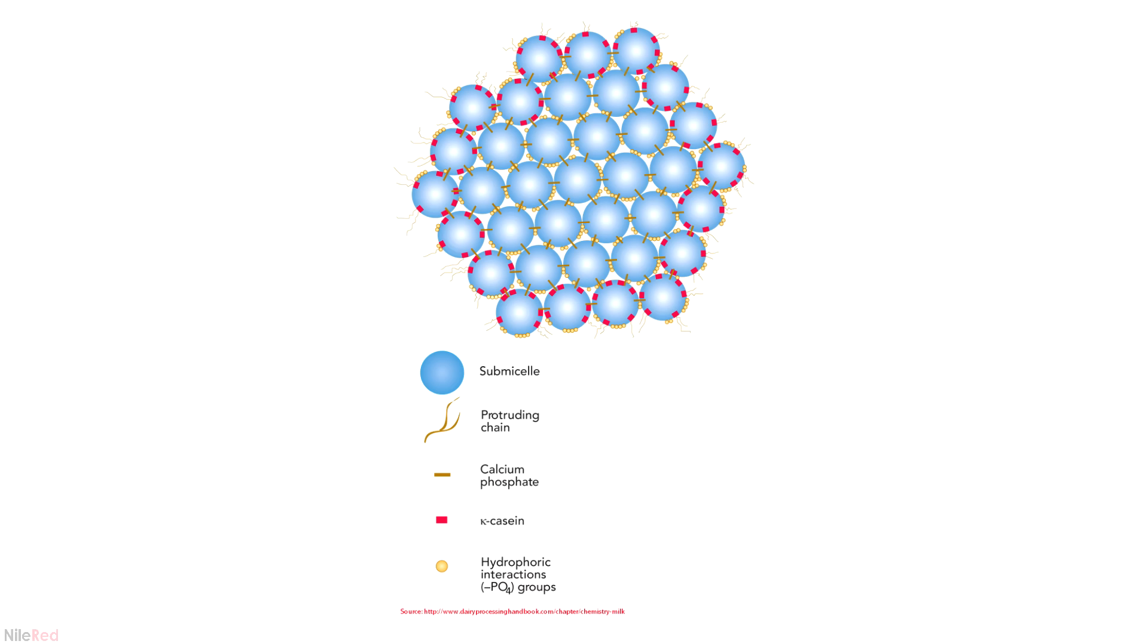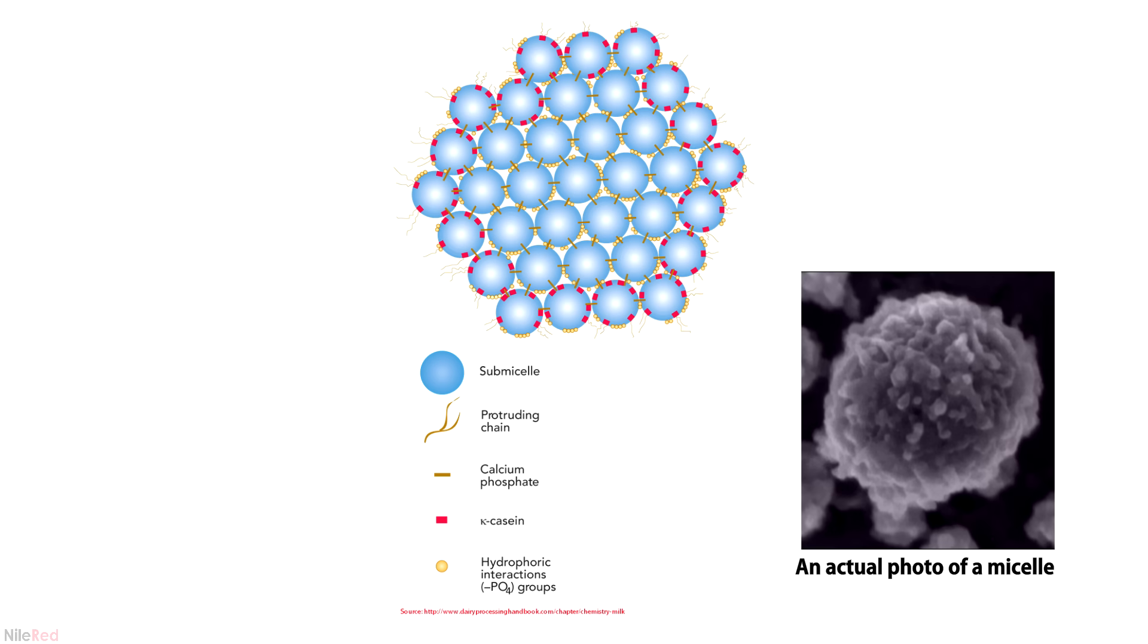Here's an artistic structure of the casein micelle. Each circle is a submicelle, which is a mixture of all three types of caseins. The outside layer is enriched with kappa caseins, and internally, the submicelles are held together by calcium phosphate interactions. The micelles are not technically dissolved in the milk, and they exist as a colloidal suspension.